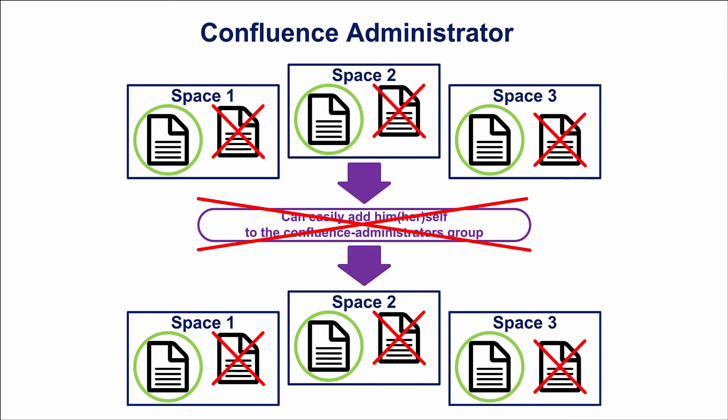Confluence Administrator permissions define who can perform most administrative functions, but cannot perform functions that could compromise the security of the Confluence system. For example, functionality such as external user management, mail service, user macros, custom HTML, backup and restore is disabled in the administration console of Confluence Administrators. Users with Confluence Administrator status also belong to the Confluence Administrators group by default, but if excluded, they can't add themselves back to this group.